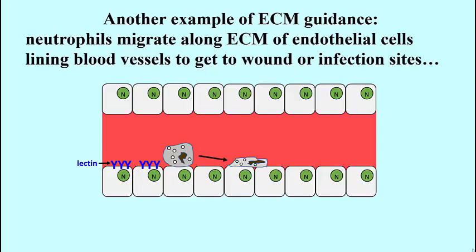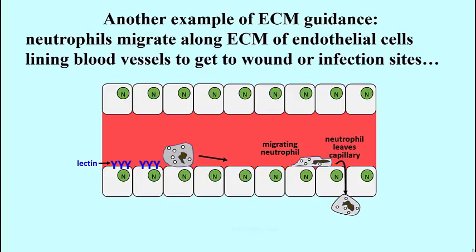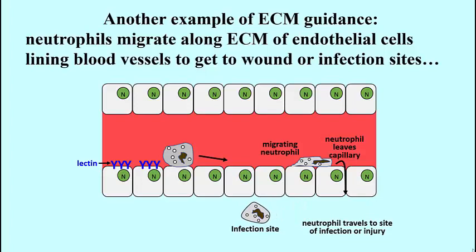Eventually, after several other events, the neutrophils can insert themselves and squeeze between endothelial cells, leaving the blood vessel and going to the site of infection where they can phagocytose or endocytose debris, bacteria, or whatever they have to remove from the wound site or site of infection. Again, it's a kind of migration that involves the neutrophils moving along the basal lamina or ECM of endothelial cells.